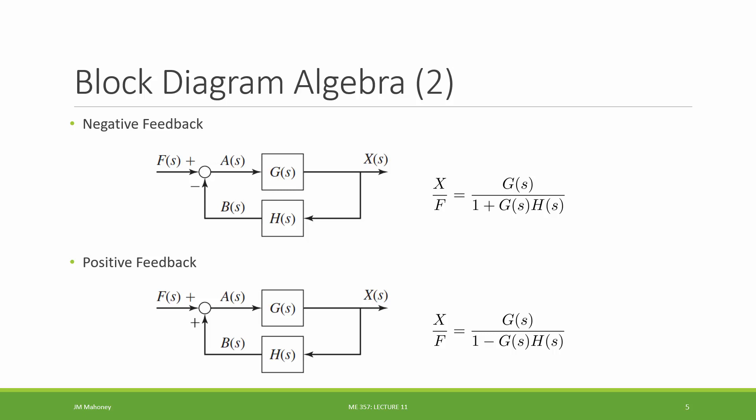Between series blocks, parallel blocks, negative feedback, and positive feedback, these are the basic building blocks for more complex systems featuring multiple transfer functions. We can take a complex system and perform reductions to find a net or effective transfer function — relating some overall output to some overall input. That relationship is the effective transfer function.